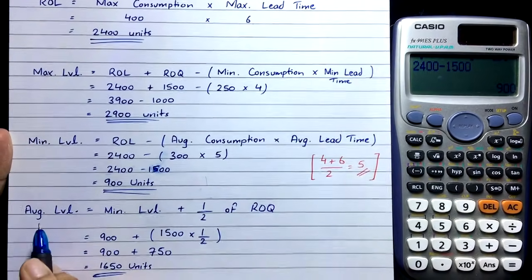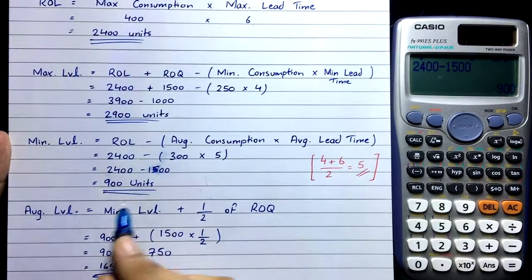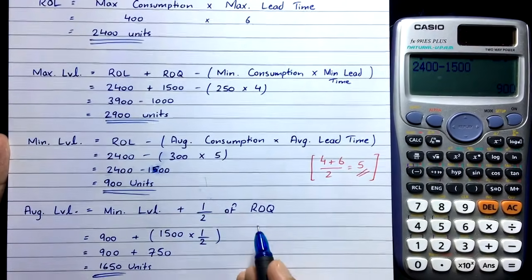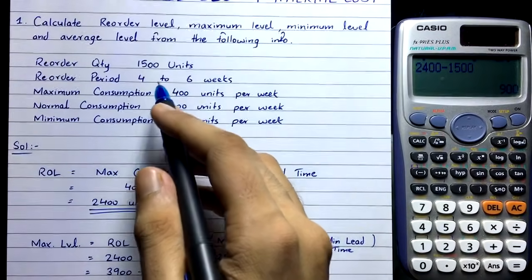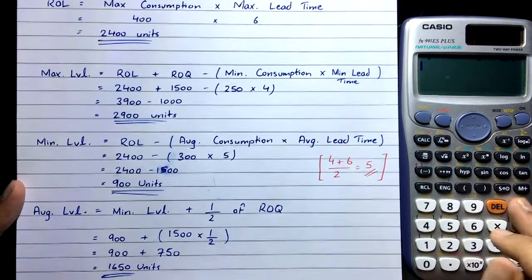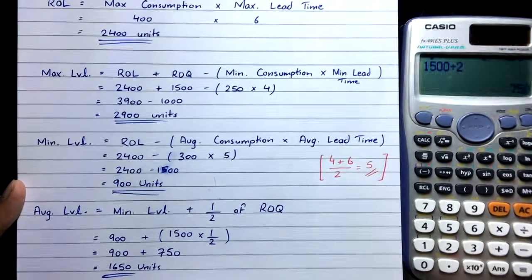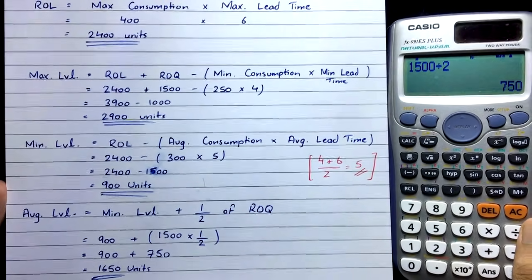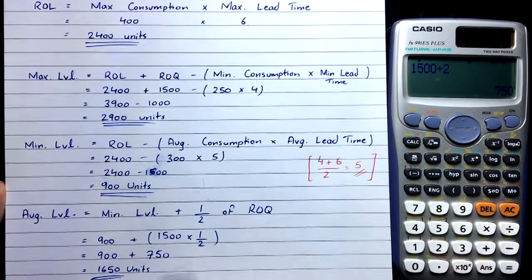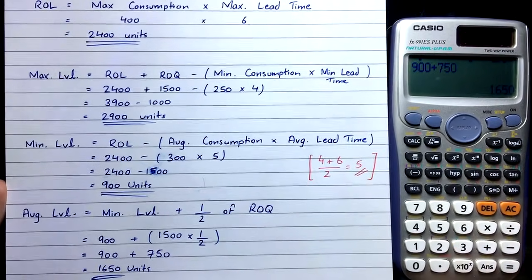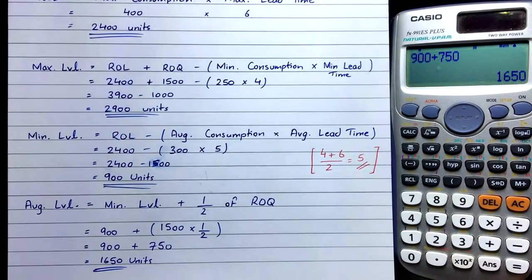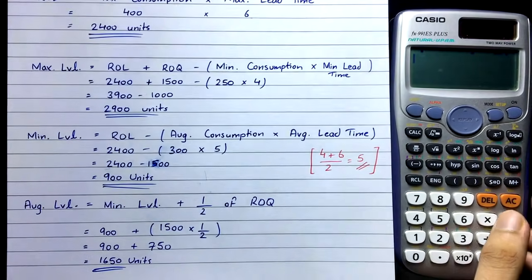Minimum level = 900 units; Reorder quantity = 1,500 units; ½ × 1,500 = 750. So, 900 + 750 = 1,650 units. Using Formula 1, the average level is 1,650 units.